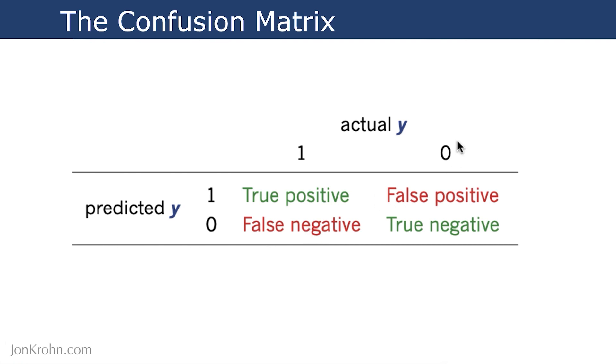On the other hand, if there really isn't a hot dog, but our algorithm predicts that there is, then this is a false positive.